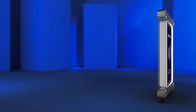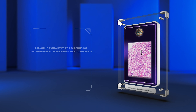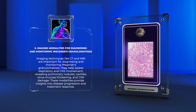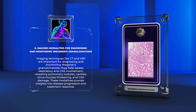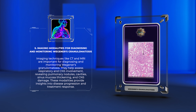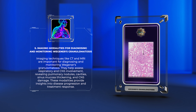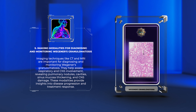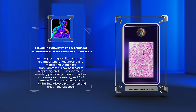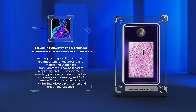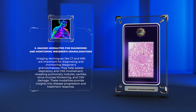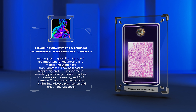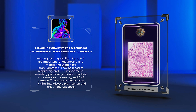Imaging techniques like CT and MRI are important for diagnosing and monitoring Wegner's granulomatosis. They help assess respiratory and CNS involvement, revealing pulmonary nodules, cavities, sinus mucosa thickening, and CNS damage. These modalities provide insights into disease progression and treatment response.